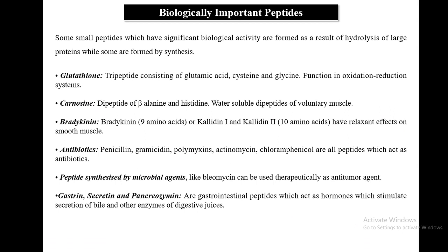Biologically important peptides: some small peptides with significant biological activity are formed by hydrolysis of large proteins, while others are synthesized. Glutathione is a tripeptide of glutamic acid, glycine, and cysteine, playing an important role in oxidation-reduction systems. Carnosine is a water-soluble dipeptide of voluntary muscle. Bradykinin involves 10 amino acids and acts as a relaxant on smooth muscles. Antibiotics such as penicillin, gramicidin, actinomycin, and chloramphenicol are peptides. Bleomycin is a peptide used as an anti-tumor agent. Gastrointestinal peptides gastrin, secretin, and pancreozymin act as hormones stimulating bile secretion and digestive enzymes.